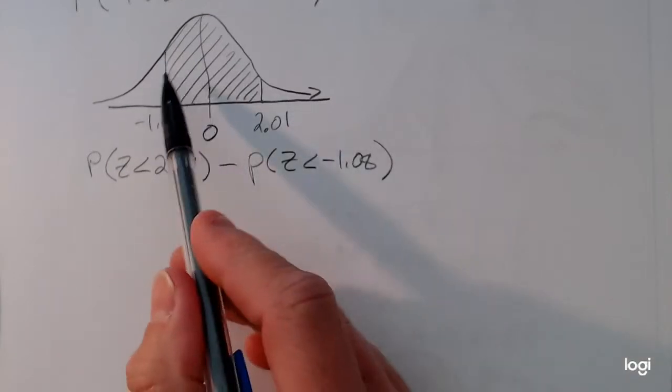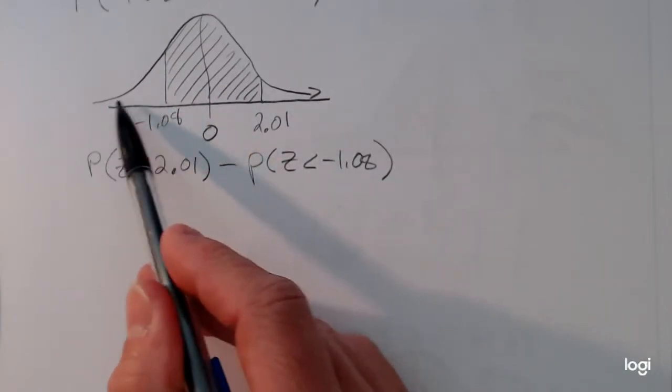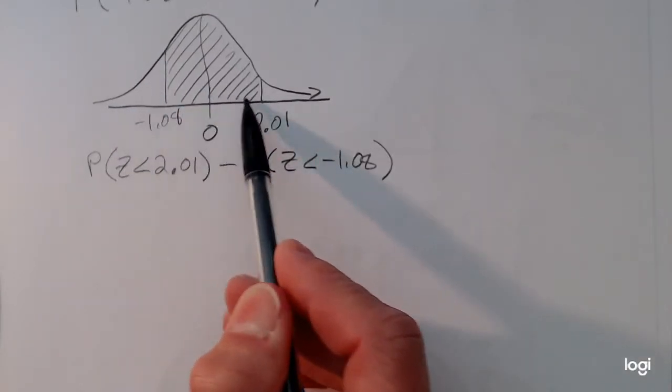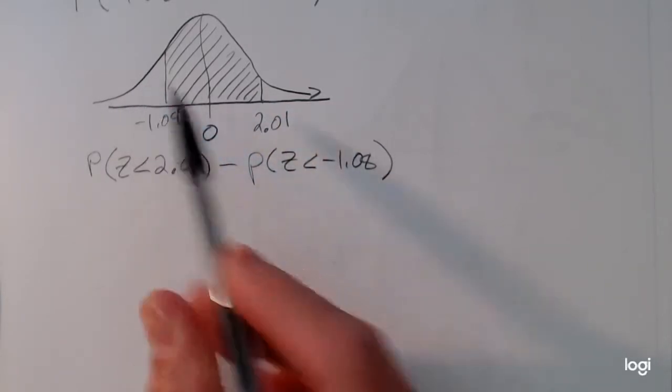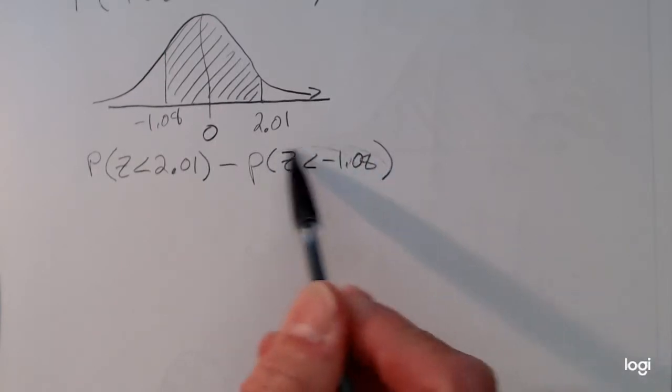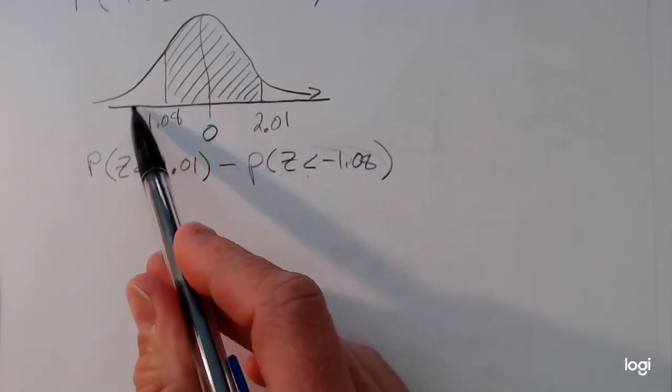So in other words, I'm finding this larger area from negative infinity up to 2.01. And I'm subtracting out the piece I don't want. So this is this right here, I'm subtracting out this unshaded tail.